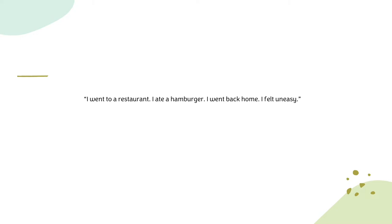Make sure that the sentence coming next is connected to the previous one. Let's see this with the help of a few examples: 'I went to a restaurant. I ate a hamburger. I went back home. I felt uneasy.' Now these sentences are quite short — each has less than five words — and although they explain an event, they seem slightly disconnected. One sentence has nothing to do with the other, so it's quite hard to follow.